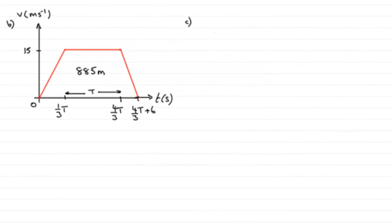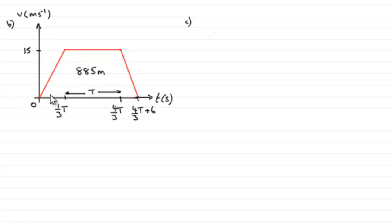Now for part c, what we've got to do is find the value of t. To find the value of t, we return to the area under the graph. Remember, the area under a speed-time graph represents the distance travelled, and that distance is 885 metres. So we just need to work out the area of this shape and equate it to 885, and solve for t.